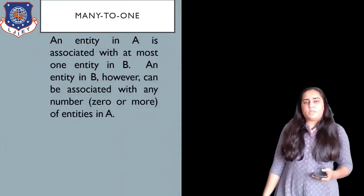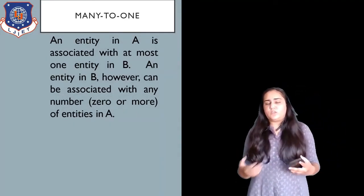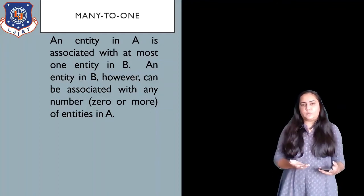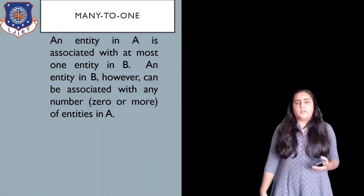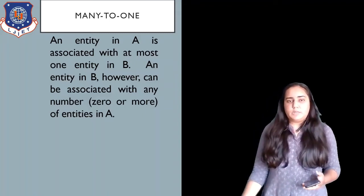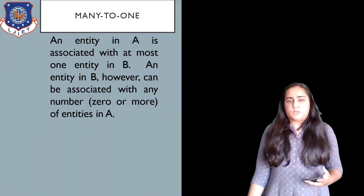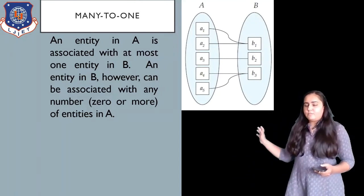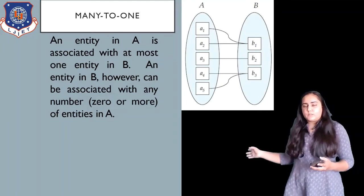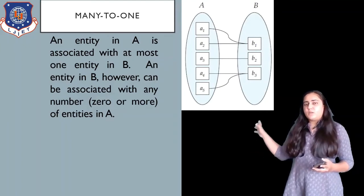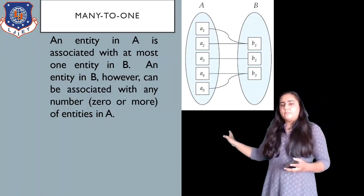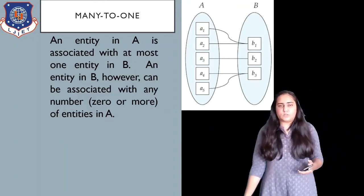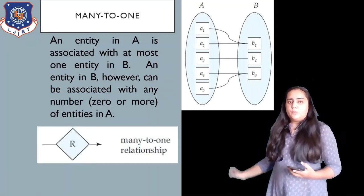You also have a many-to-one relationship, which is looking from the opposite direction — from B to A. The definition of many-to-one is the opposite of one-to-many: an entity in A is associated with at most one entity in B, and an entity in B can be associated with any number — zero or more — of entities in A. Several entities of A are associated with only one entity in B, but from B, every entity is associated with several entities in A.